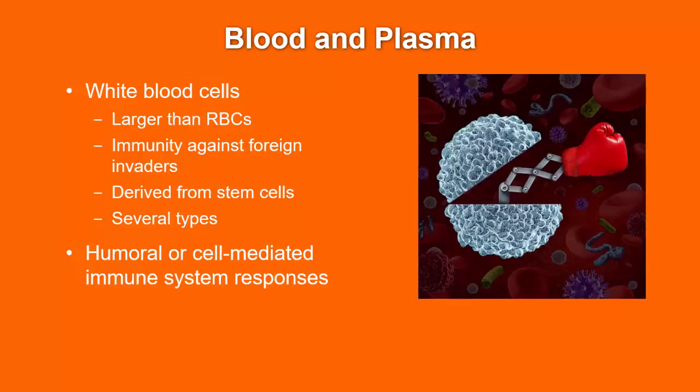White blood cells, or fighter cells, are larger than red blood cells. They provide immunity against foreign invaders and are derived from stem cells. Several types exist, each performing a specific task to maintain the immune system. Neutropenia is an abnormally low number of neutrophils, which make up the majority of circulating white blood cells. Immune system responses are categorized into humoral immunity — the secretion of antibodies called immunoglobulins that recognize specific antigens — and cell-mediated immunity, in which macrophages and T cells attack and destroy pathogens or foreign substances.